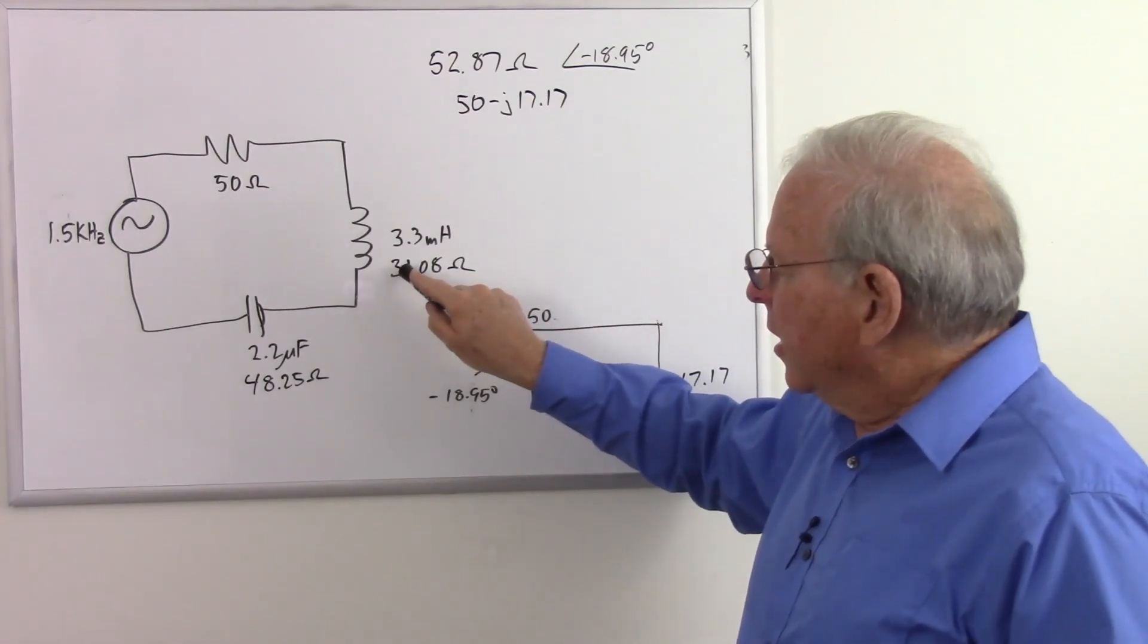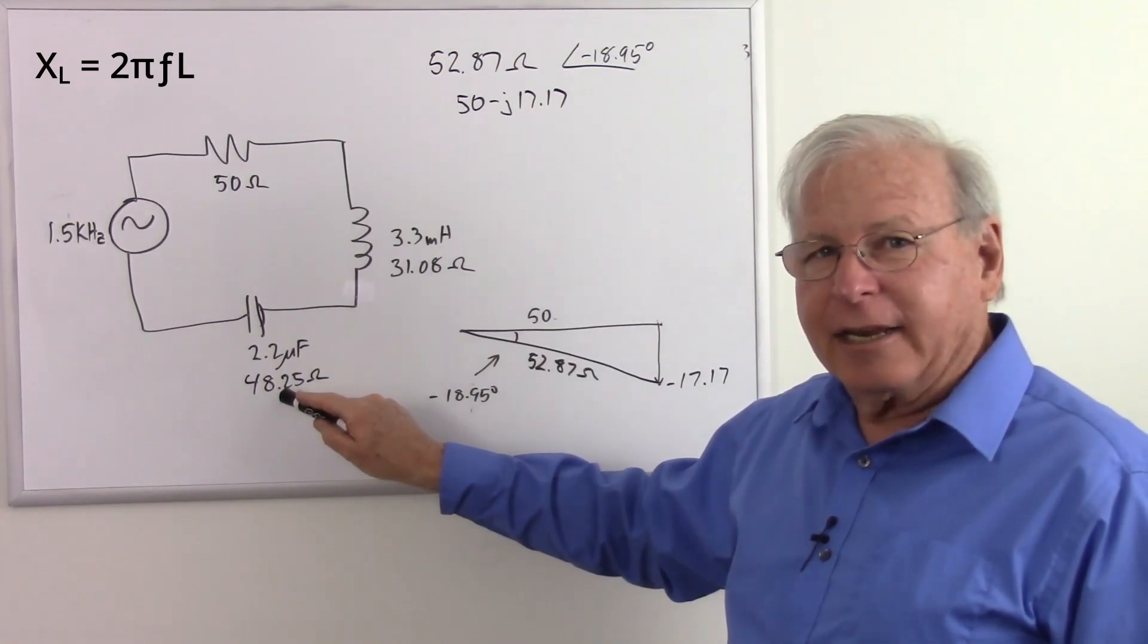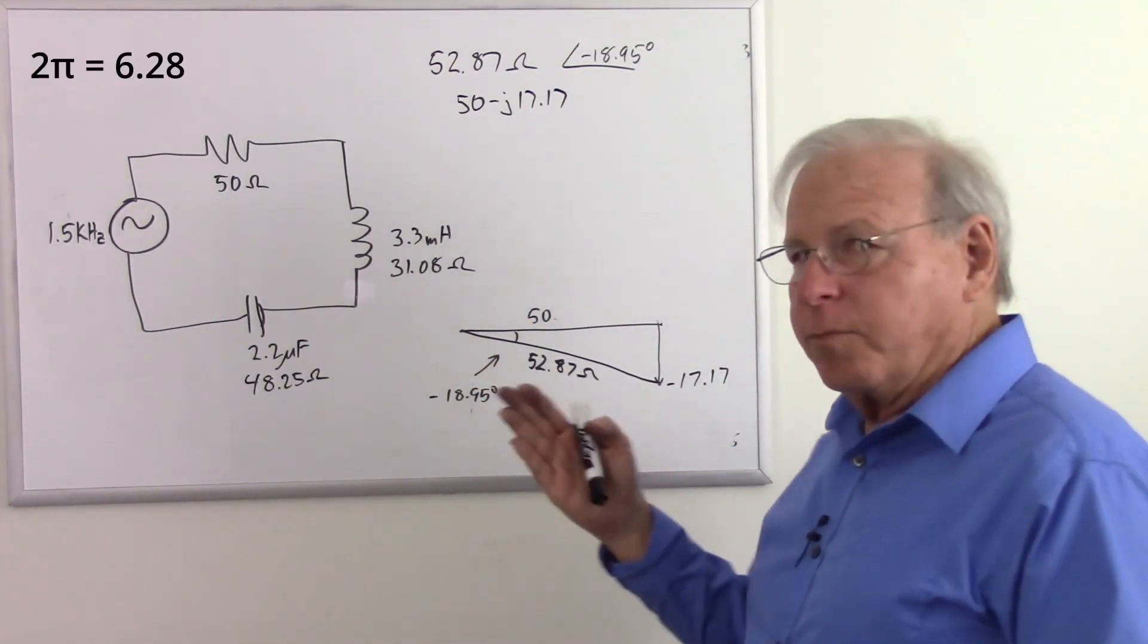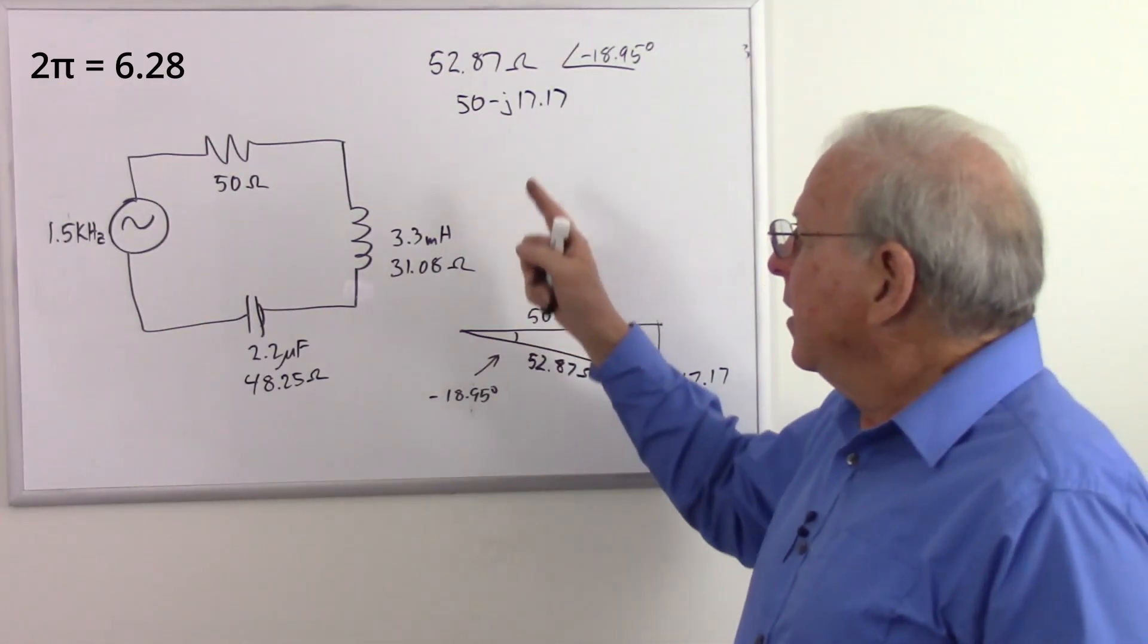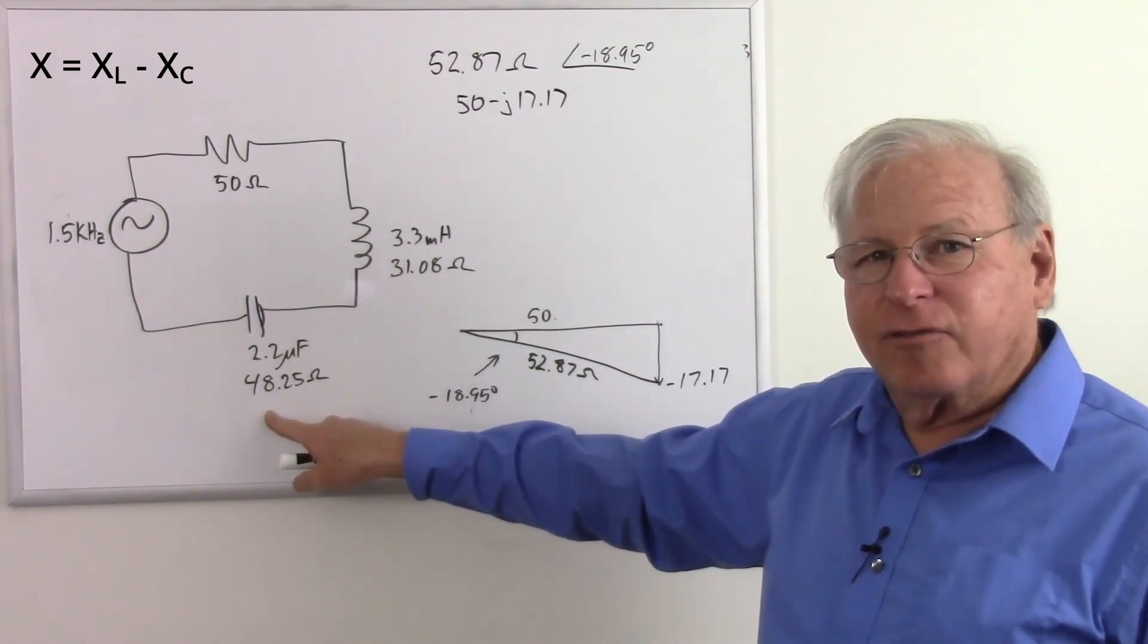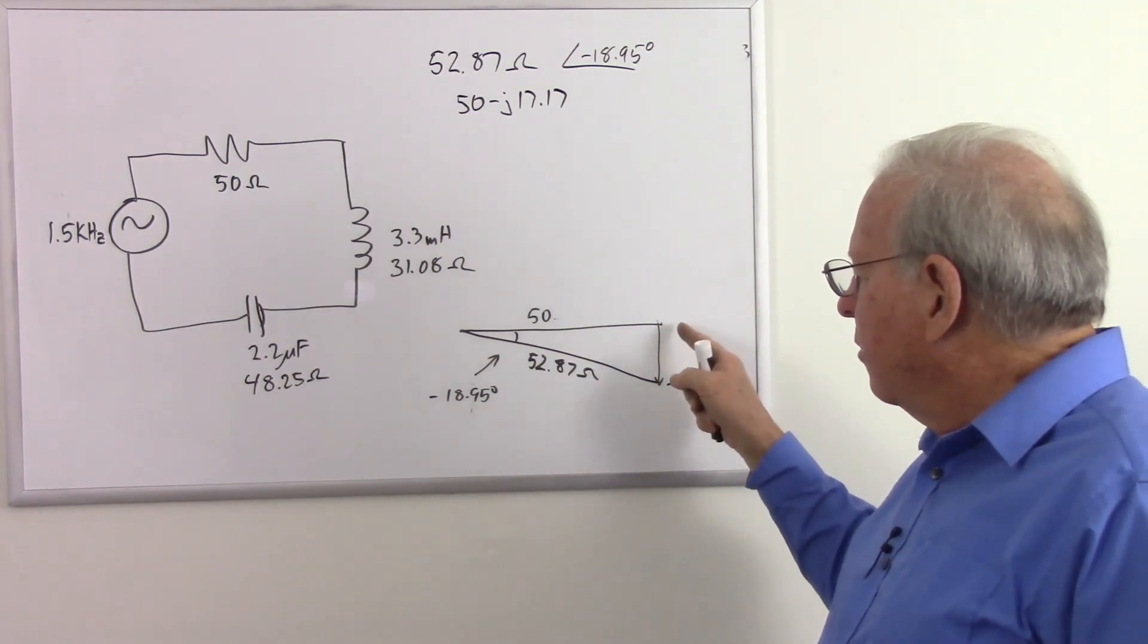We find our inductive reactance, X sub L equals 2 pi F L. Find our capacitive reactance, X sub C equals 1 over 2 pi F C. 2 pi, of course, is 6.28. Calculate those together. Then we subtract our capacitive reactance from our inductive reactance to find our total reactance, which gives us the side of our triangle.